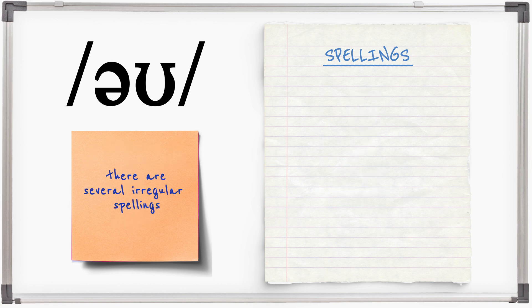Several irregular spellings also occur: so, mauve, broach, bureau, chauffeur, beau, yeoman, with several of these words imported from French.